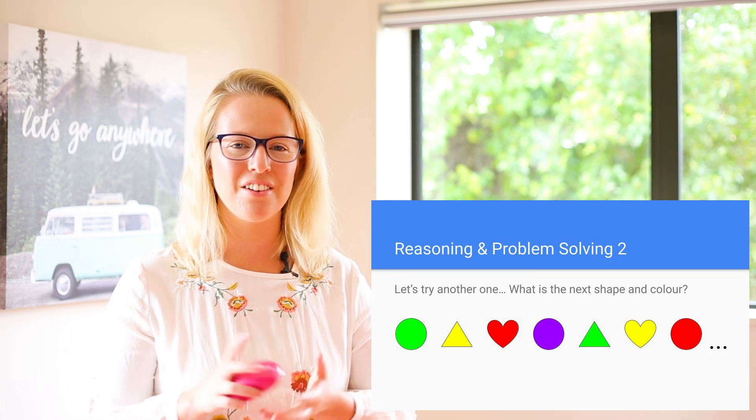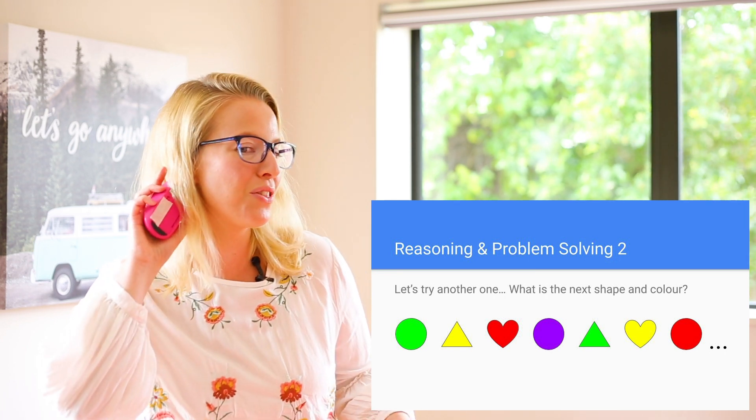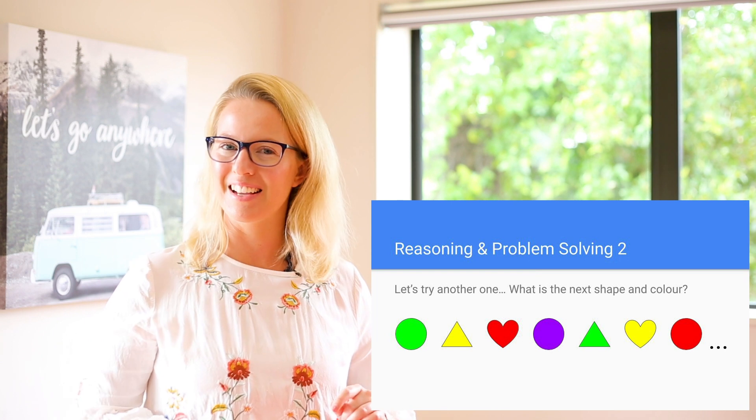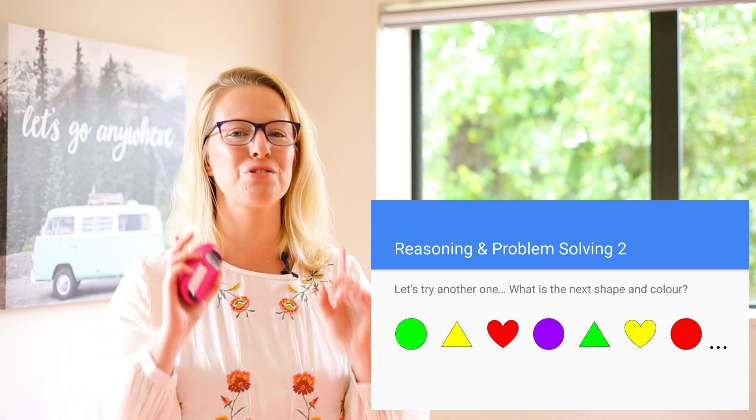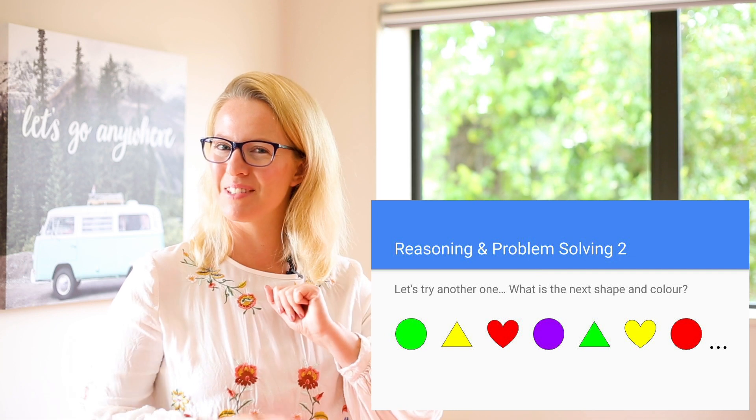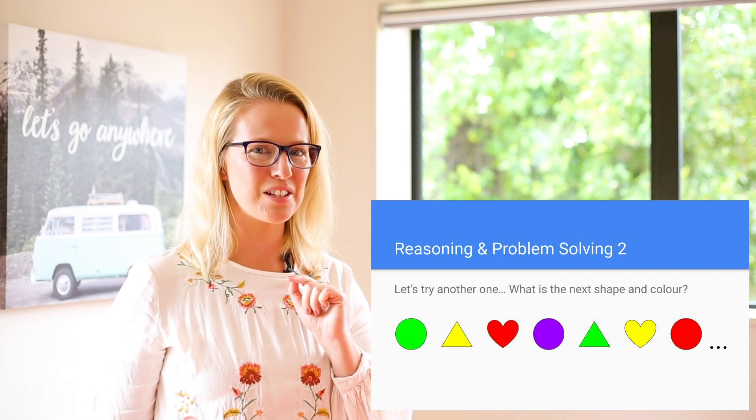All right, have you got your answer on the count of three? One, two, three. Perfect. It is a purple triangle. Did you get that one right? I hope so. All right, let's do the next one.